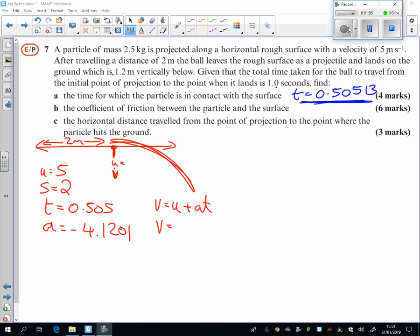So the V that we want is equal to 5 minus 4.1201 times by the time was 0.505. Being careful to use those values in their entirety.